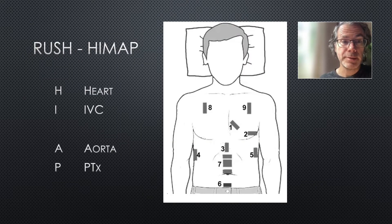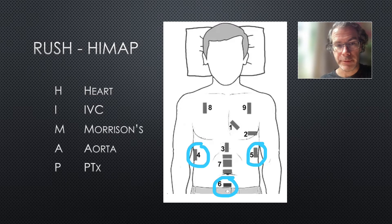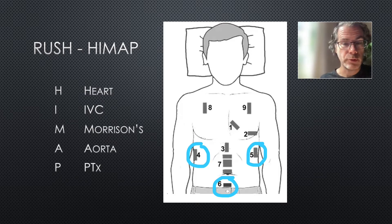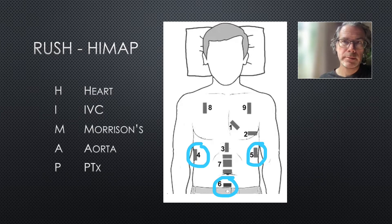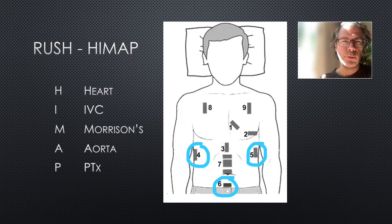The next part of the HIMAP exam is M for Morrison's pouch — really a free fluid scan of the right and left upper quadrants and the pelvis. This would be relevant if there was intra-abdominal bleeding or a suspected ruptured ectopic in a young female. In this case it was a young man with no history of trauma and no abdominal pain, so I decided to skip this part of the exam.